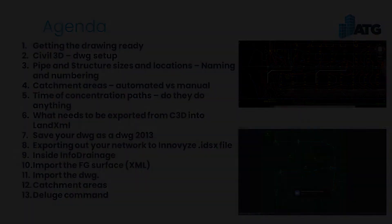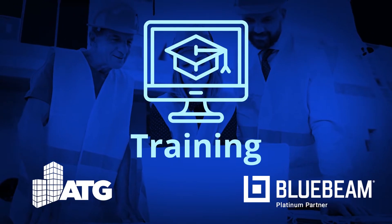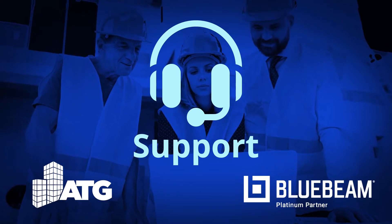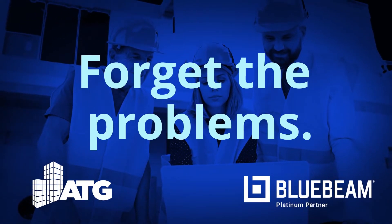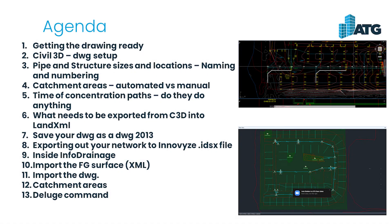One thing I learned: for some reason it won't let me open just the current Civil 3D drawing in InfoDrainage, but I found that if I do a Save As back to AutoCAD 2013 format it opens fine. I don't know if that's just a me problem, but that was my current workaround — I'll show you that. Not a big deal.